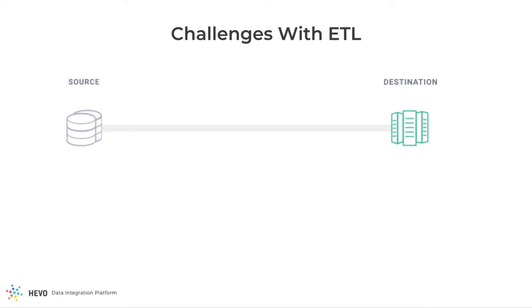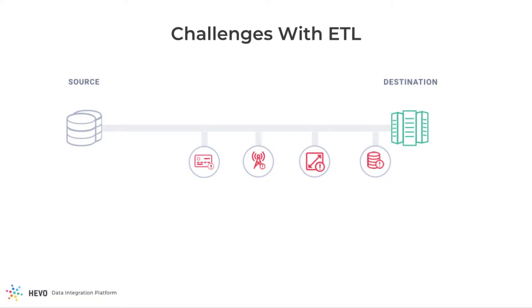While performing ETL from any source to a destination, there are many things that can go wrong. The incoming data may have unexpected fields or missing fields. There could be network failures or a sudden surge in the scale of incoming data. Sources and destinations may intermittently not be available. These are a few common phenomena in the ETL process. These exceptions may cause the entire data flow to break or have missing data.